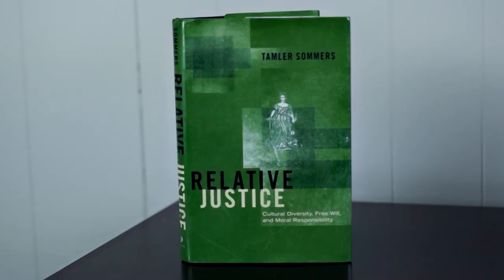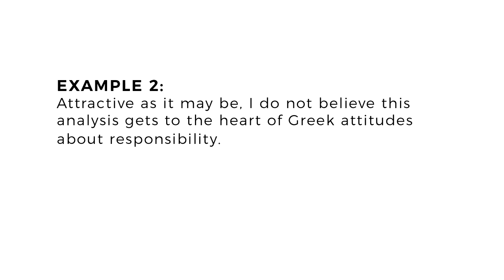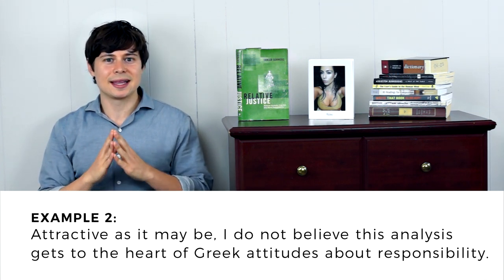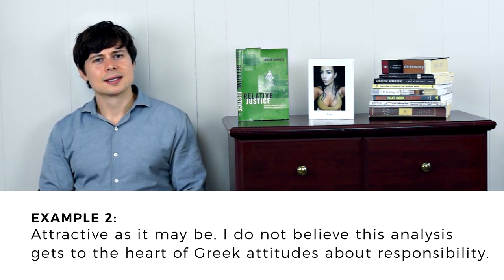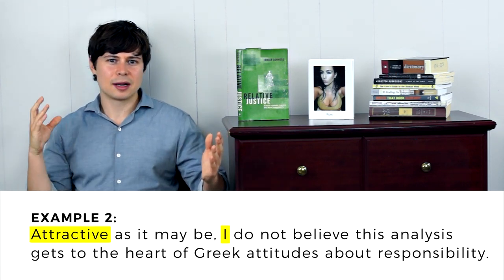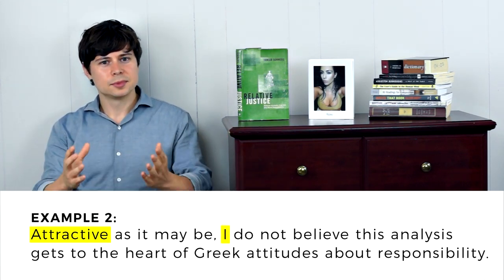Our second example comes from philosophy professor Tamler Summers in his book Relative Justice. Let's look at the subject that comes immediately after the comma. Does the subject 'I' connect with the modifier 'attractive'? You tell me.